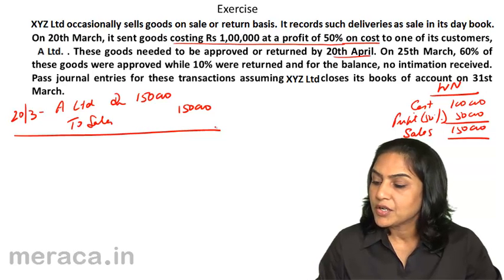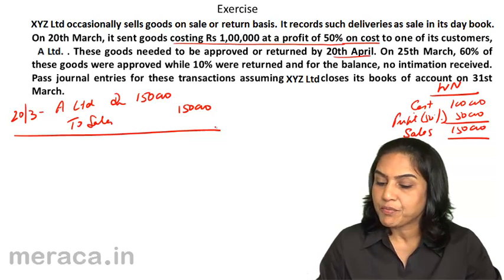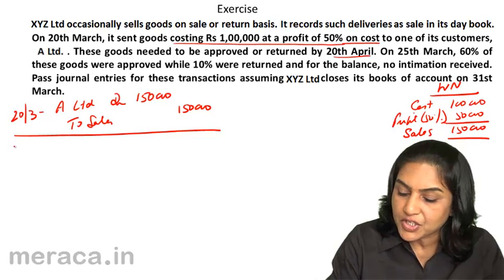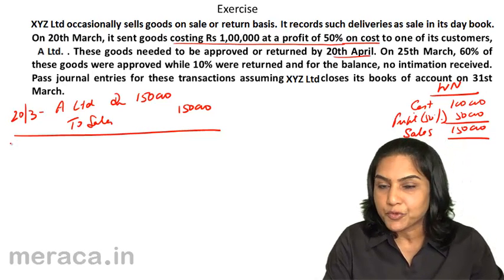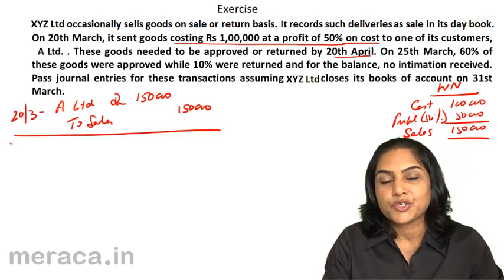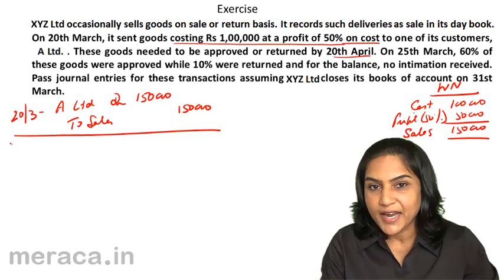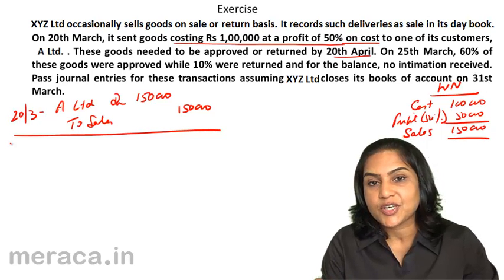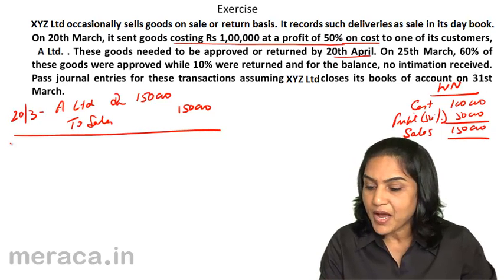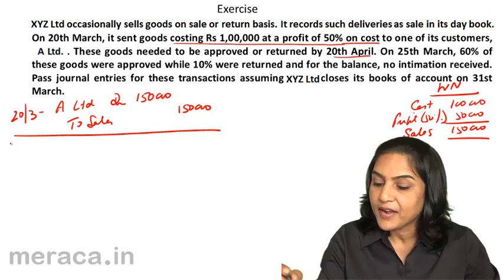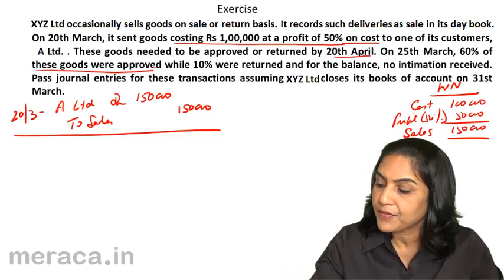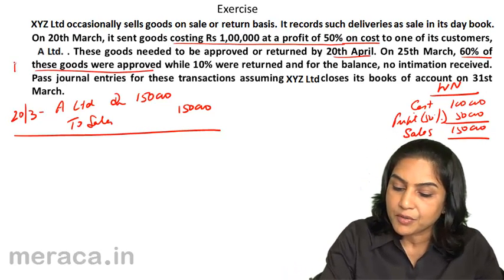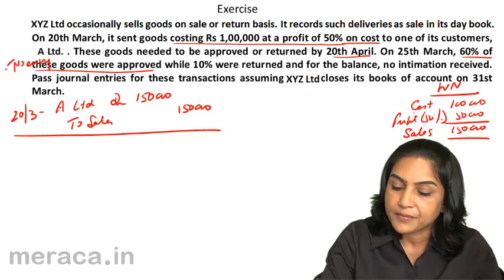Next, on 25th April, 60% of the goods are approved. When goods are approved, we do not pass any entry since the sales transaction has already been recorded. So, no entry for the goods which are approved.